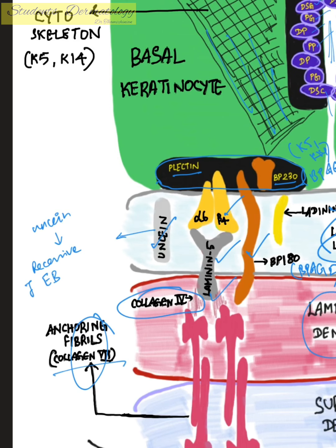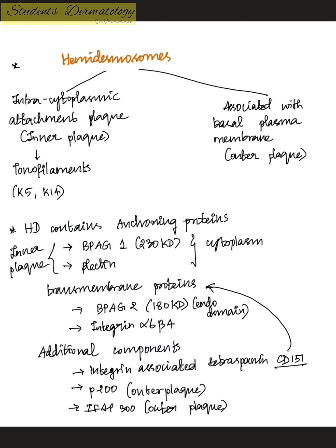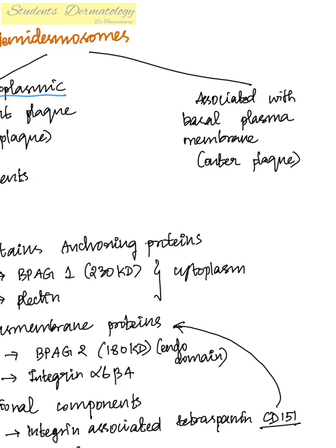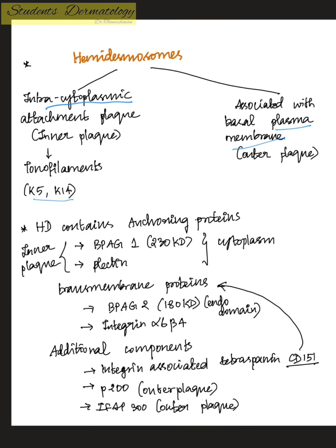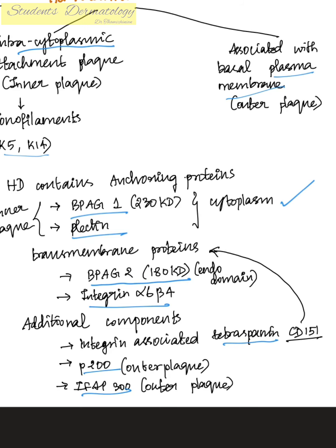Returning to hemidesmosomes: the inner part is the intracytoplasmic part, attached to tonofilaments keratin 5 and 14. The outer part is associated with the plasma membrane. The hemidesmosome contains anchoring proteins — bullous pemphigoid antigen 1 (230 kDa) and plectin — present in the cytoplasm, and transmembrane proteins including integrin alpha-6 beta-4 and bullous pemphigoid antigen 2. Additional components involved are p200, IFAP300, and tetraspanin CD151.